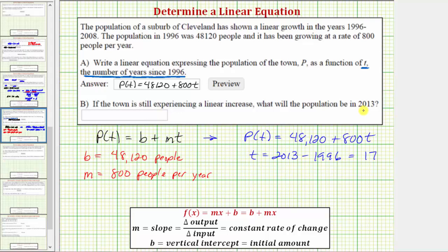So to answer the question for part B, to predict the population in 2013, we need to determine the value of P(17). So P(17) is equal to 48,120 plus 800 times 17. Let's evaluate this on the calculator.